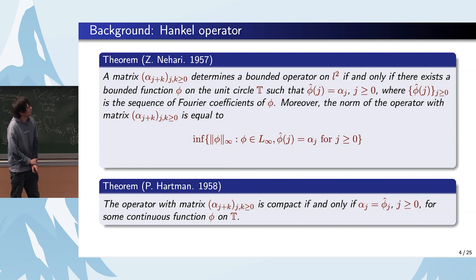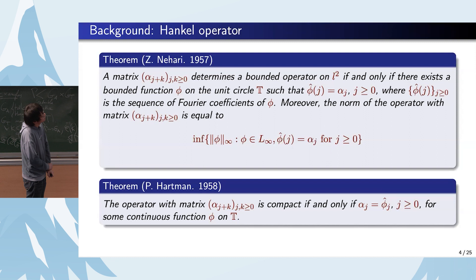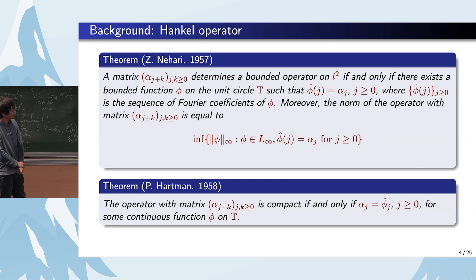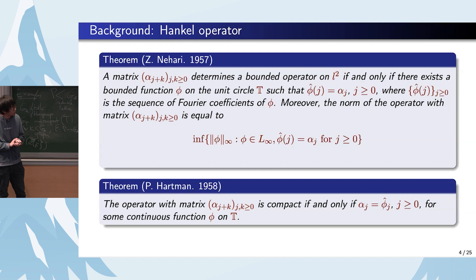In 1957, Nehari gave the boundedness characterization of the Hankel operator: the Hankel operator is bounded if and only if there exists a bounded function phi on the unit circle T such that the Fourier coefficients of phi equal alpha_j. Moreover, he gives the norm of the Hankel operator. In 1958, Hartman described the compactness: it holds if and only if alpha_j equals the Fourier coefficients of some continuous function phi on T.